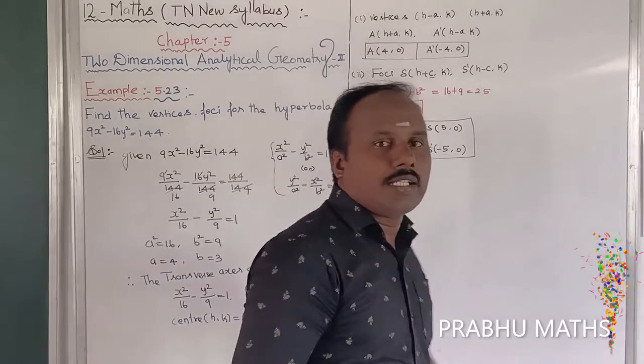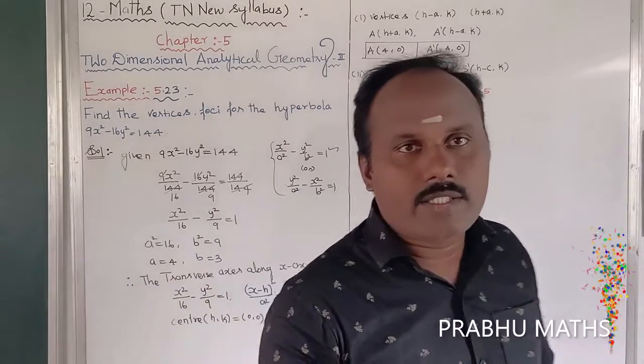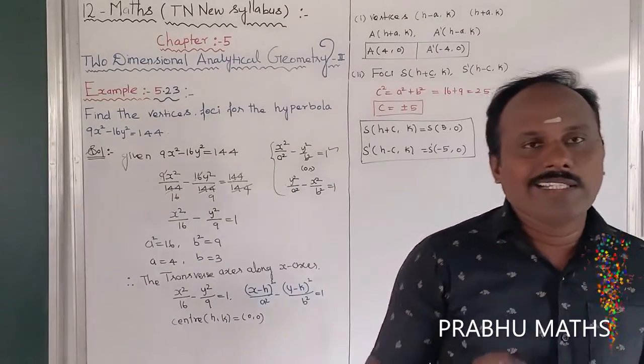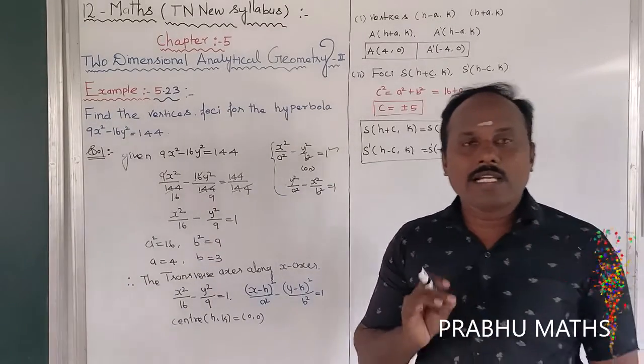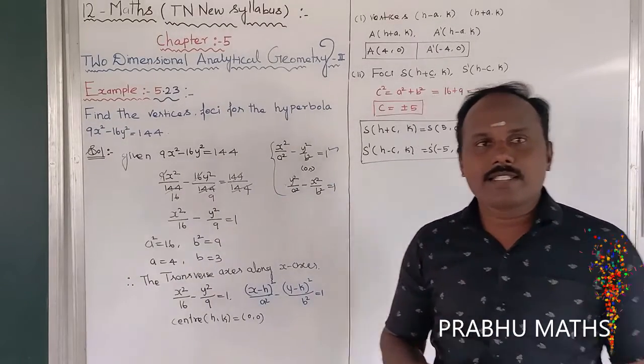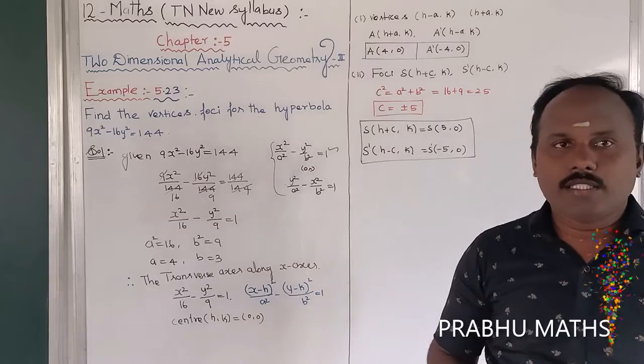The length of the transverse axis is 2a and the length of the conjugate axis is 2b.